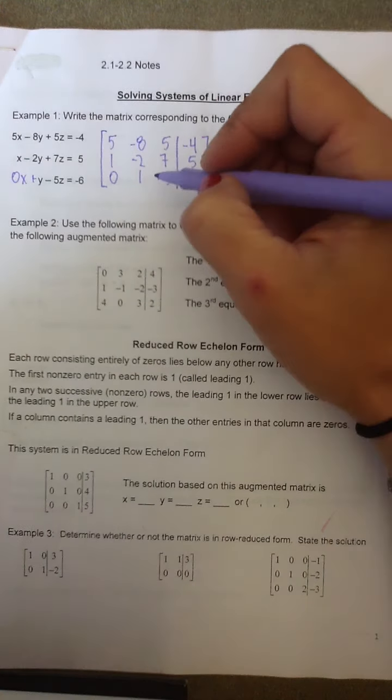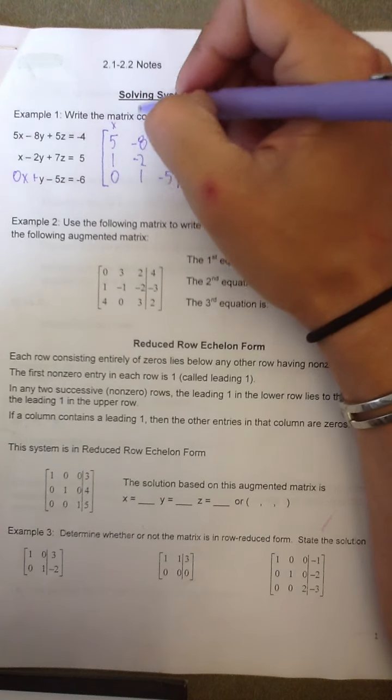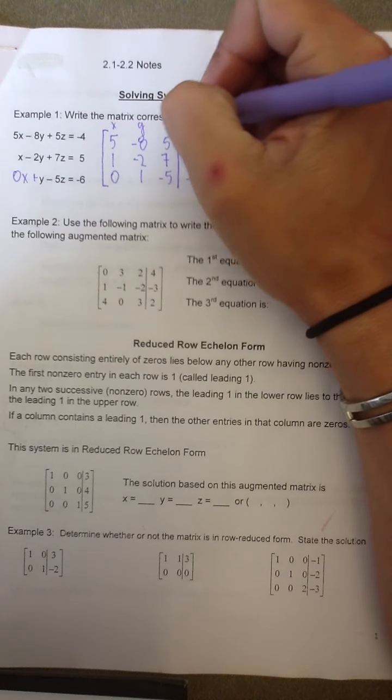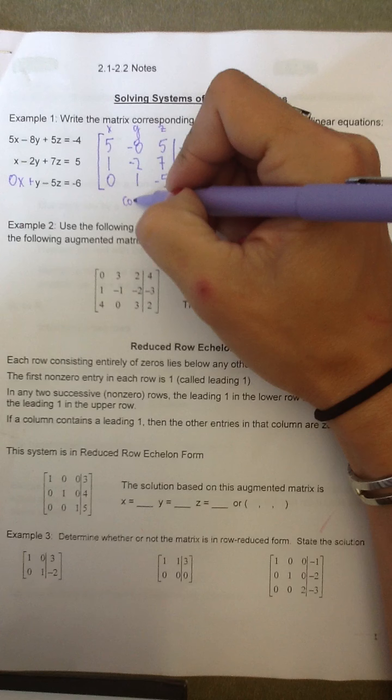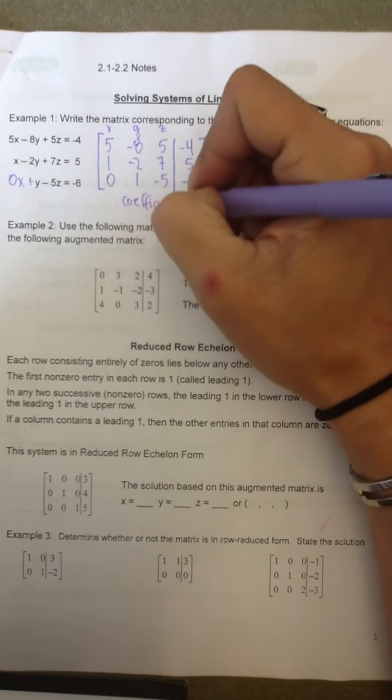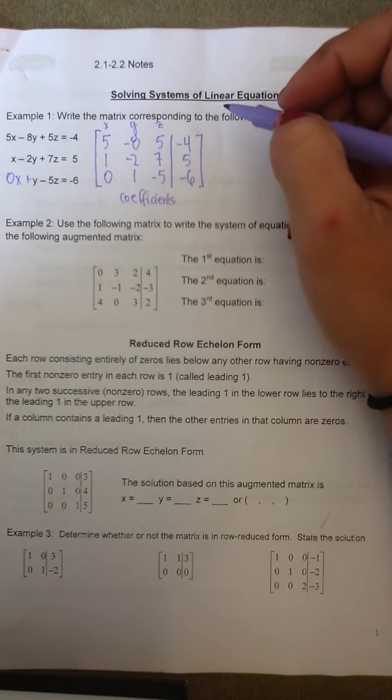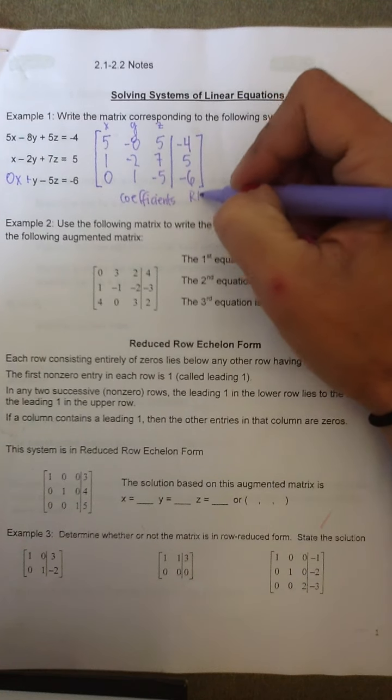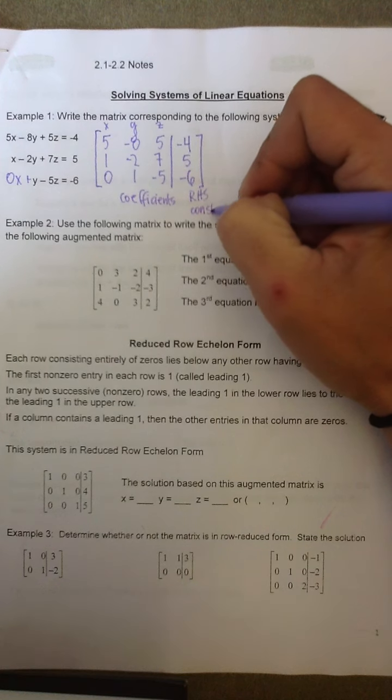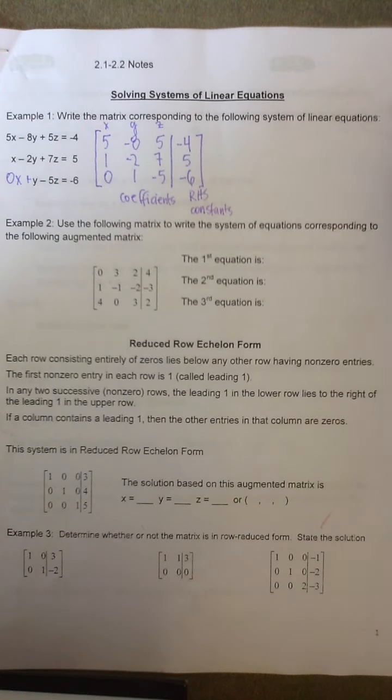So on the left, I have the x, y, and z coefficients. And then on the right, I have what I will call the right hand side or the constants. Feel free to pause this video at any time or rewind and go back to see what you missed.